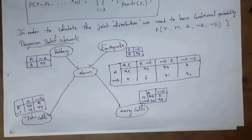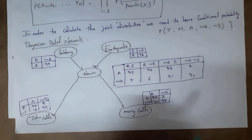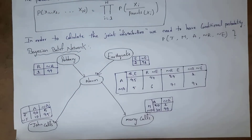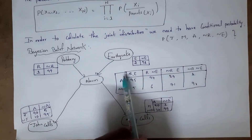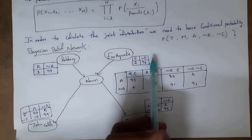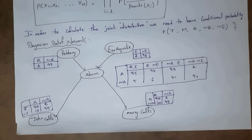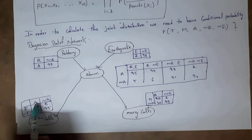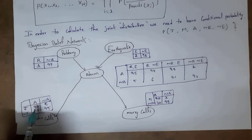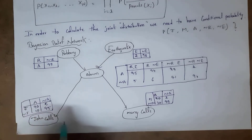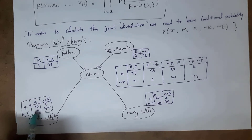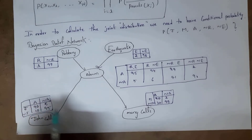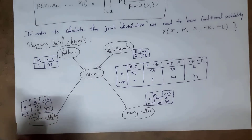Remember: you write the probability of a particular variable by comparing it with its parent variable. Robbery and earthquake have no parent variables, so their tables are written directly. For John calls, the parent is alarm. Whenever alarm rings, there is a 90% chance John will call police and 10% he will not. Whenever alarm does not ring, there is a 5% chance John calls and 95% he will not.